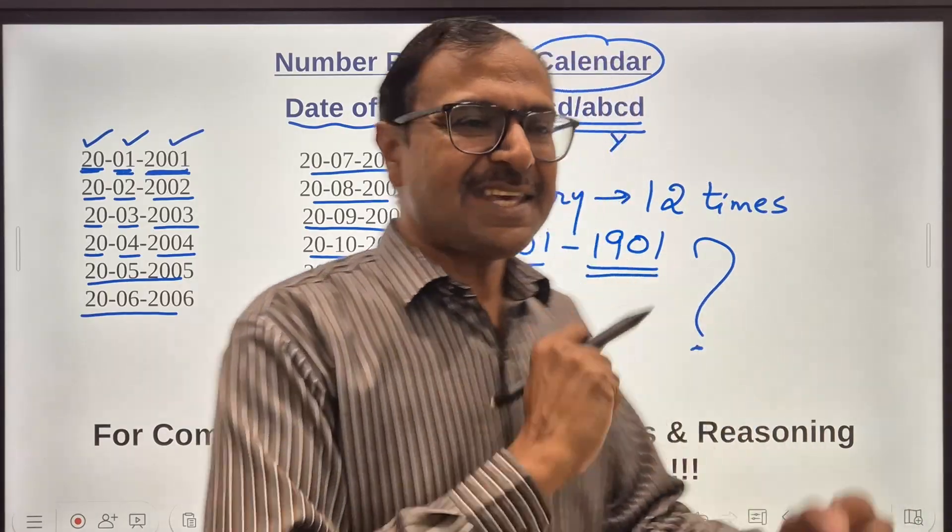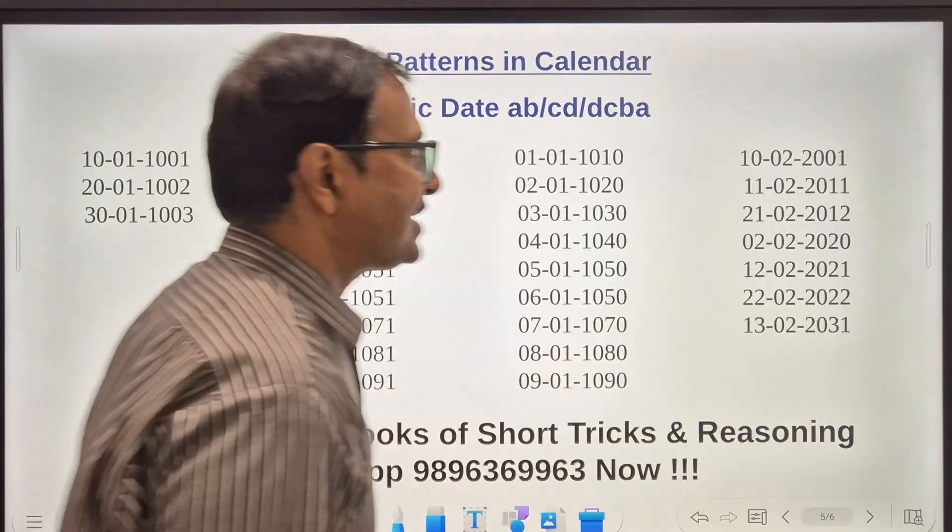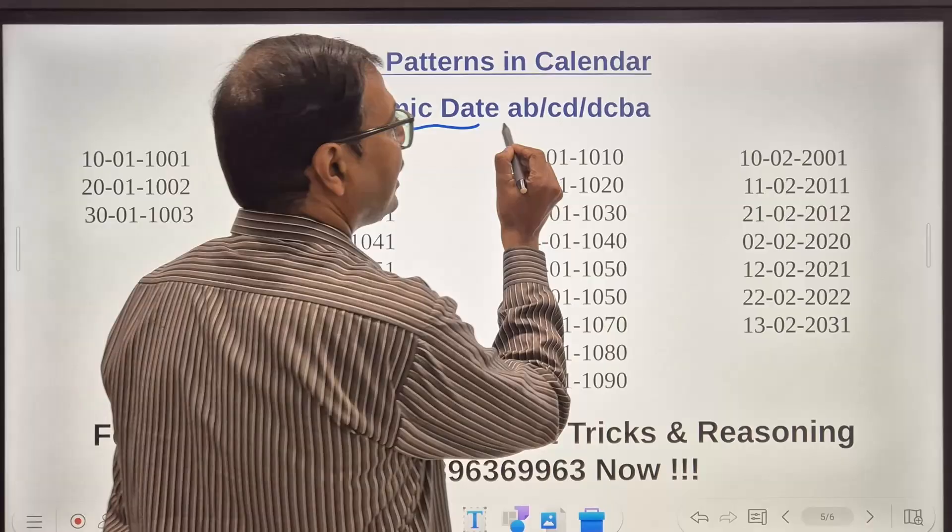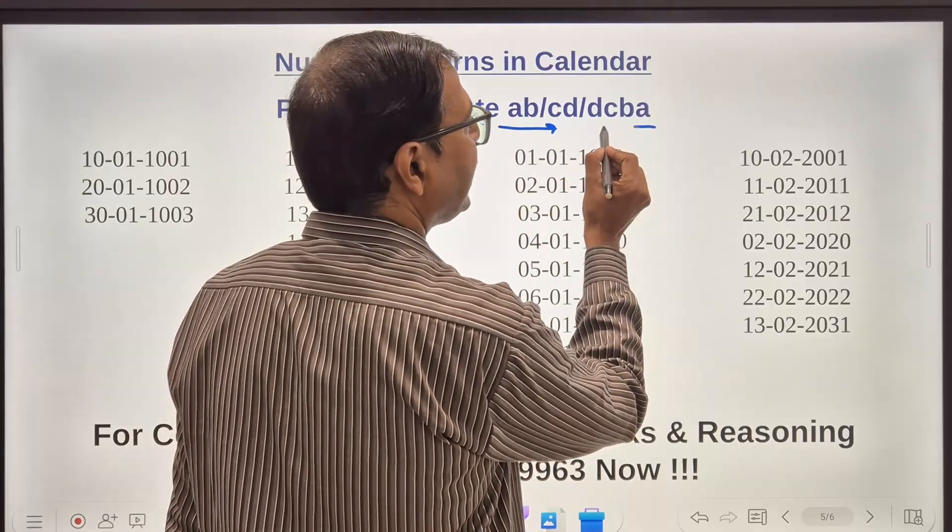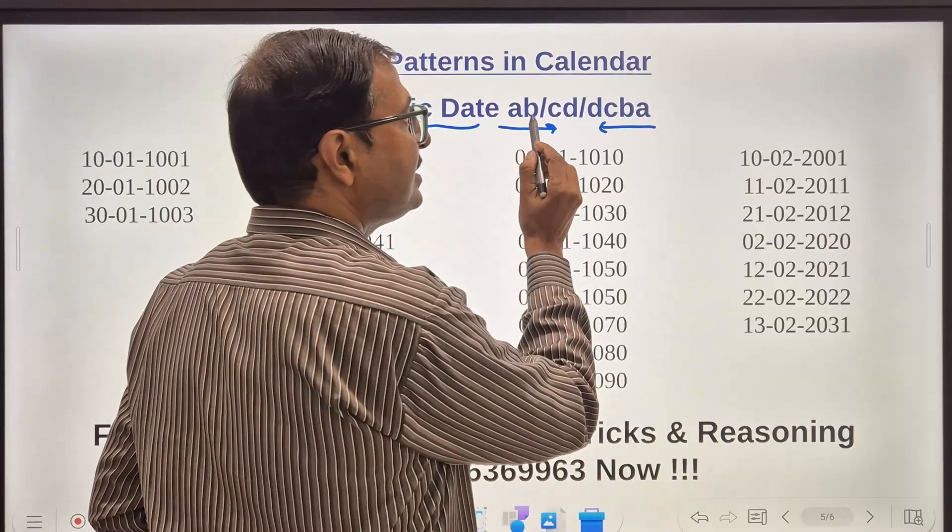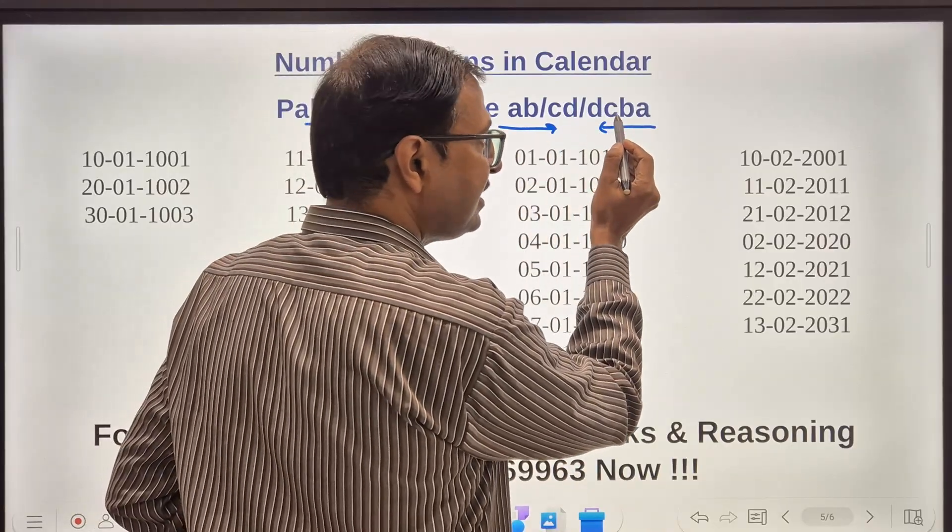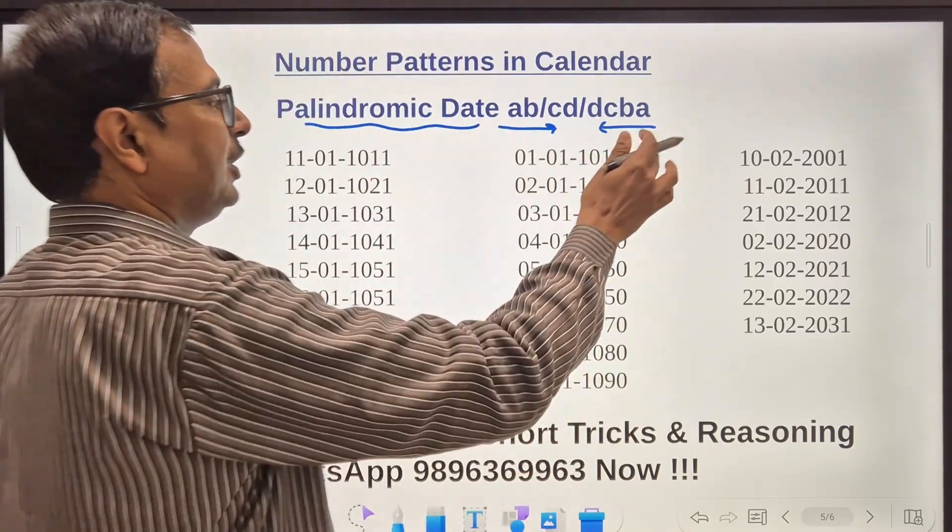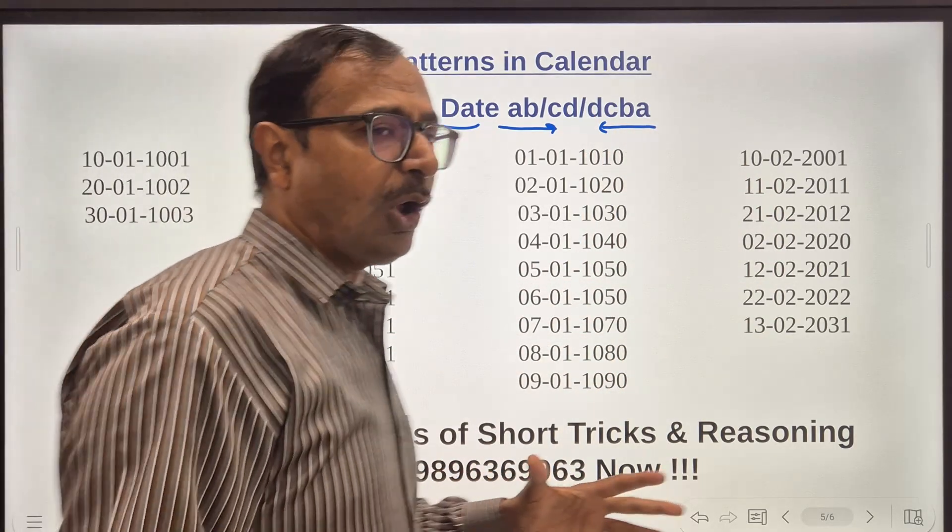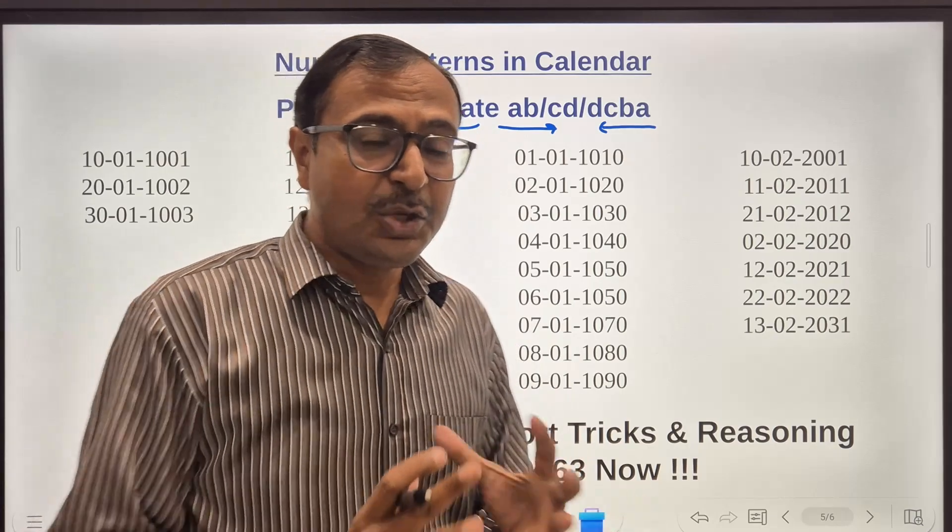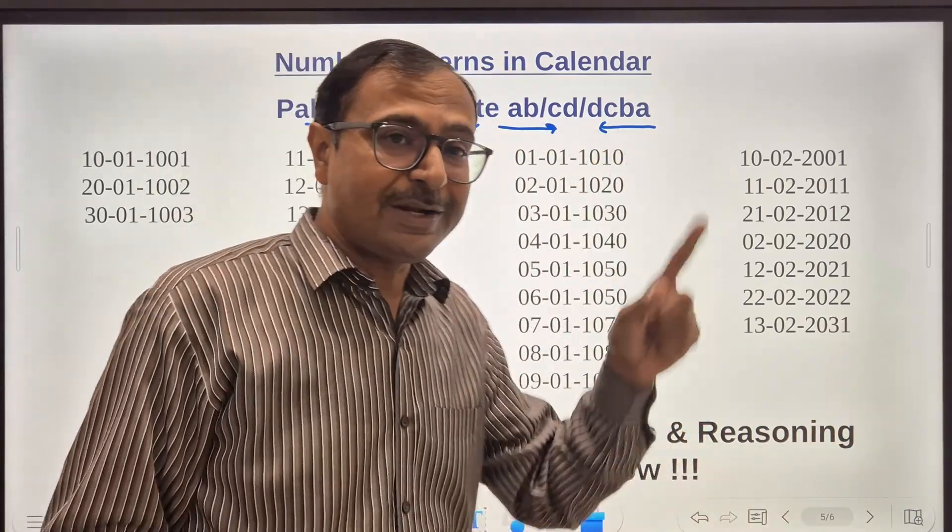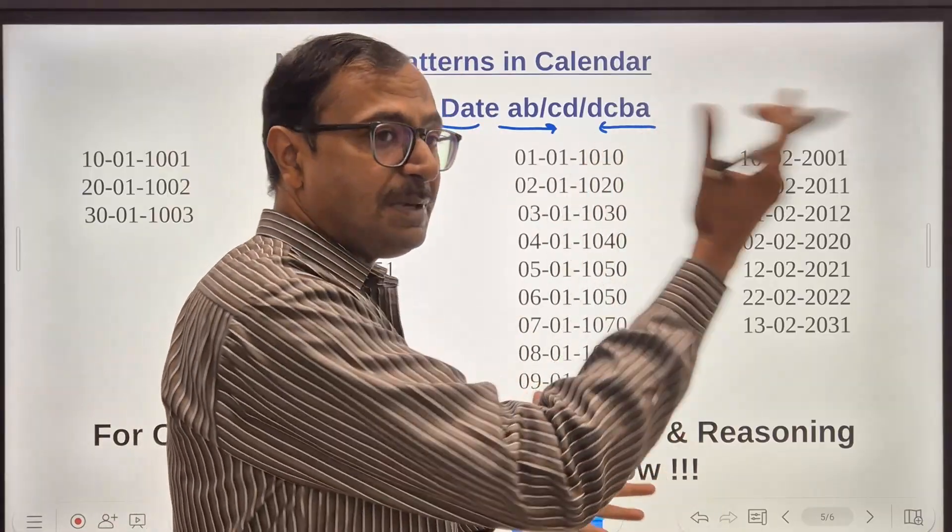Let's see another number pattern very interesting. Now this is a palindromic date. That means you read it from the left to right or from right to left you get the same thing AB/CD/DC/BA. Now look at the number of dates we have written here and this is not all. There are huge number of combinations of obtaining the palindromic dates.